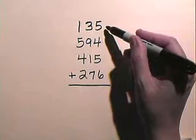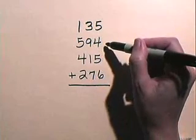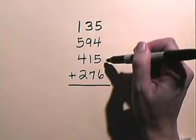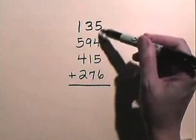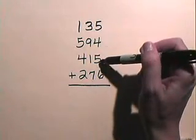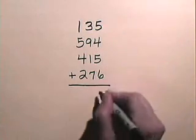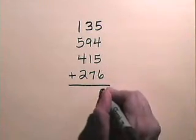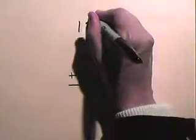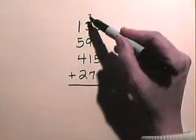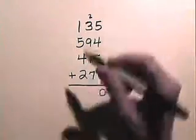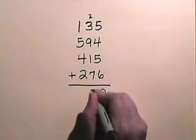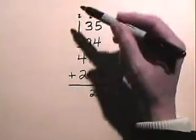Now let's add 135 plus 594 plus 415 plus 276. We will add the digits: 5 plus 4 is 9, plus 5 is 14, plus 6 is 20. So we'll put our 0 there and carry our 2. 3 plus 2 is 5, plus 9 is 14, plus 1 is 15, plus 7 is 22. So we'll place a 2 here and carry this 2 and add.